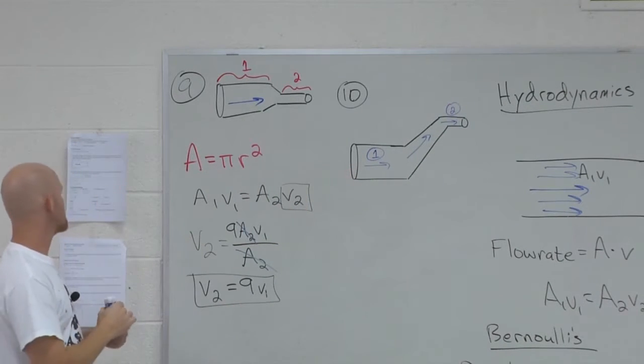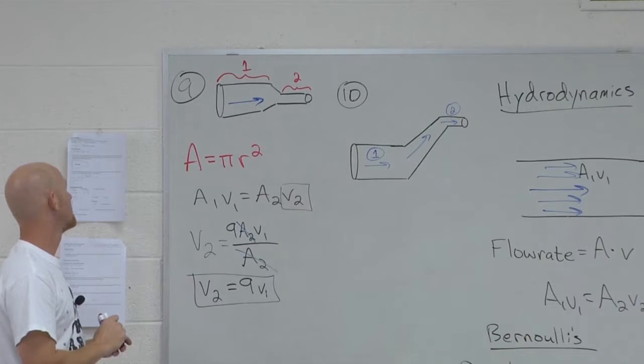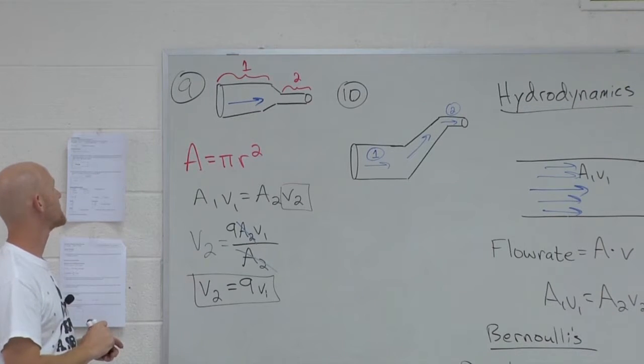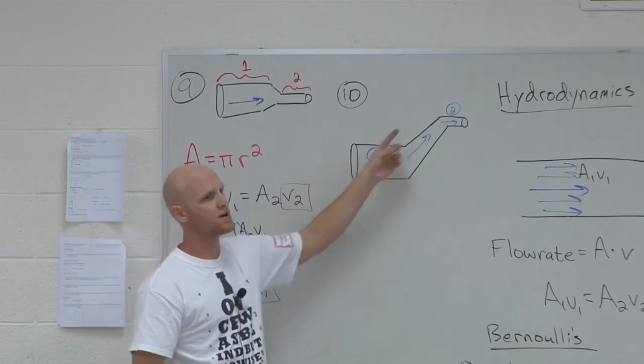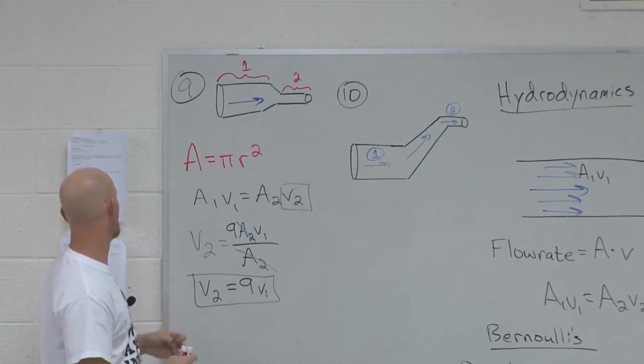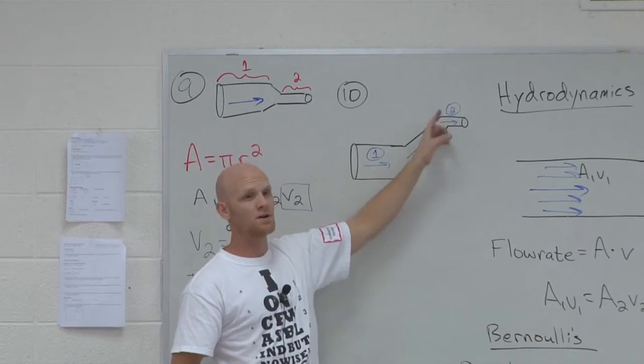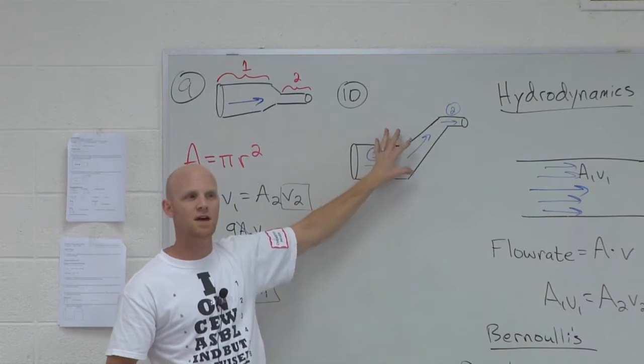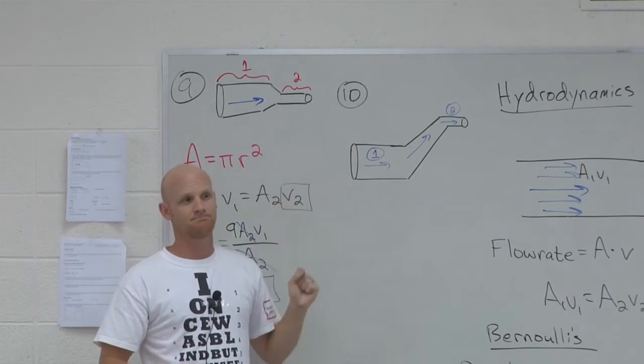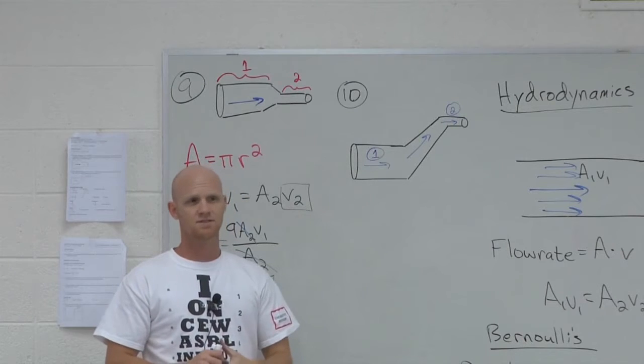And the question is, for an ideal fluid undergoing steady flow, in which region of the pipe is the pressure higher? Region one, region two, or you can't tell? There's not enough info to be able to tell. So totally just purely conceptual.